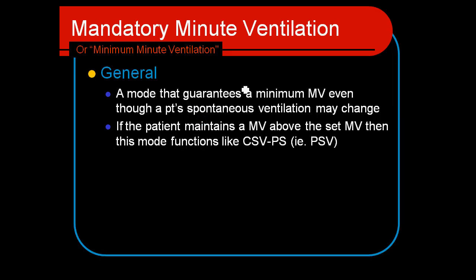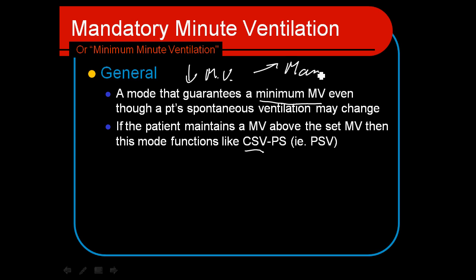Generally speaking, this is actually a continuous spontaneous mode of ventilation — in fact it's pressure support with a minimum minute ventilation guarantee. If a patient drops below the minute ventilation established on the ventilator, the ventilator will kick in with mandatory or assisted breaths. If they remain above this minute ventilation, the ventilator simply allows the patient to continue breathing on the pressure support level set.